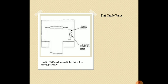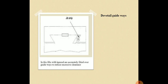Next is the flat guideways. From the figure you can see it has a gib strip and adjustment screws. These flat guideways are used in CNC machines and have better load carrying capacity. Next is the dovetail guideways. After a certain period of use, we can see that wear may occur. Hence, gibs with a taper are accurately fitted over the guideways to reduce this excessive clearance. In such cases, dovetail guideways are used.